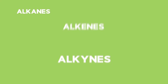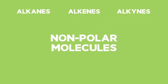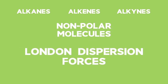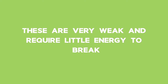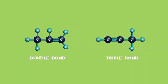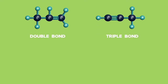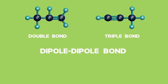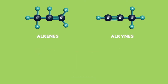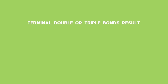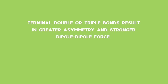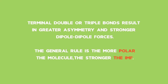Alkanes, alkenes and alkynes are generally non-polar molecules and have predominantly London dispersion forces between the molecules. These are very weak and require little energy to break. The asymmetry of a double or triple bond may result in the presence of a very weak dipole-dipole bond as well, which may cause alkenes and alkynes to have slightly stronger IMF than alkanes. Terminal double or triple bonds result in greater asymmetry and stronger dipole-dipole forces. The general rule is: the more polar the molecule, the stronger the IMF.